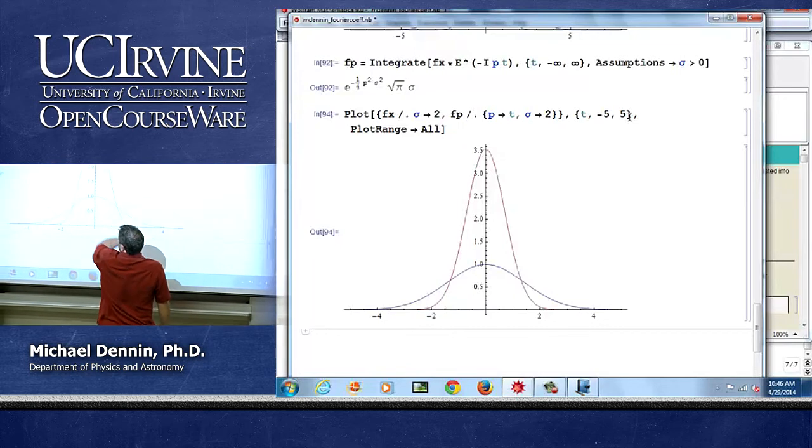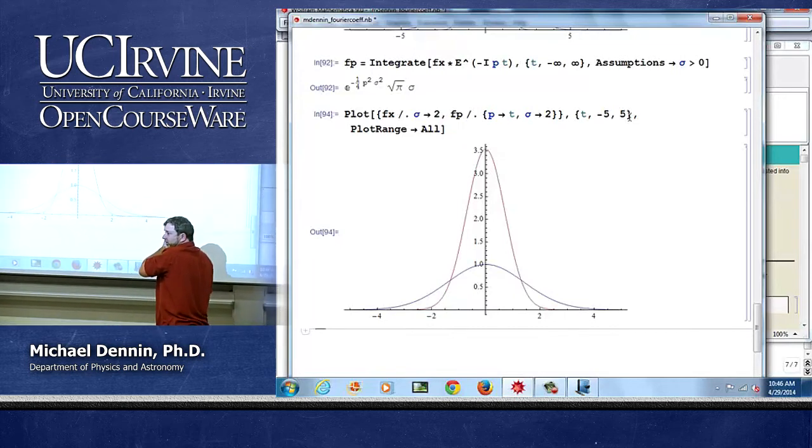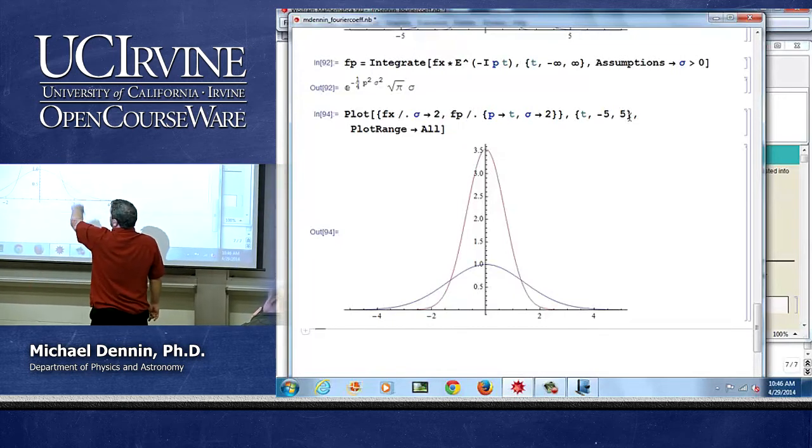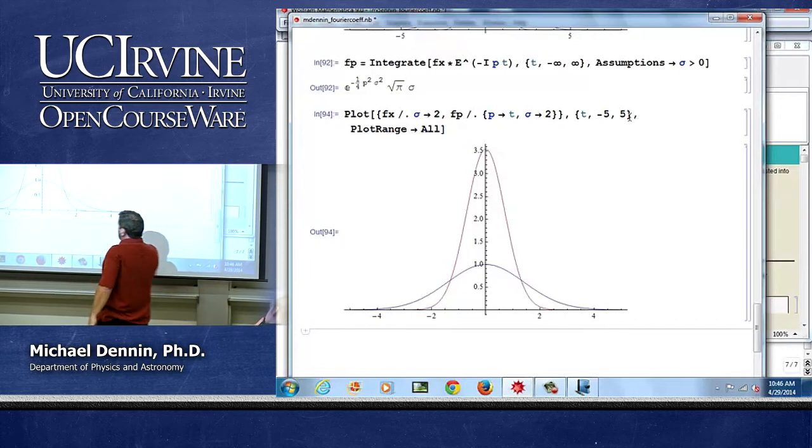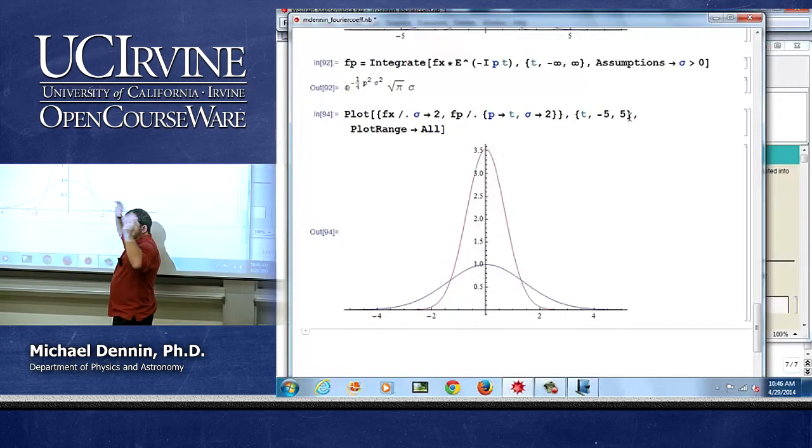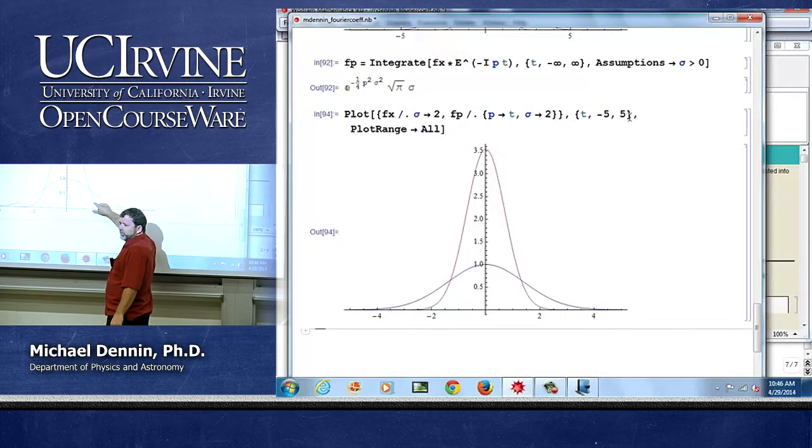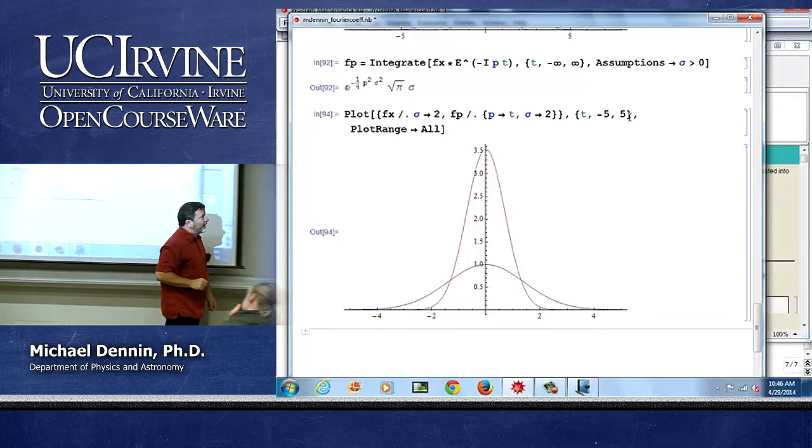So I can substitute more than one thing by using the vector notation. So here I'm using a list for the things I'm plotting, and notice Mathematica is nicely, because I don't have this weird table thing going on, I explicitly put my list in here, it's doing different colors for me.